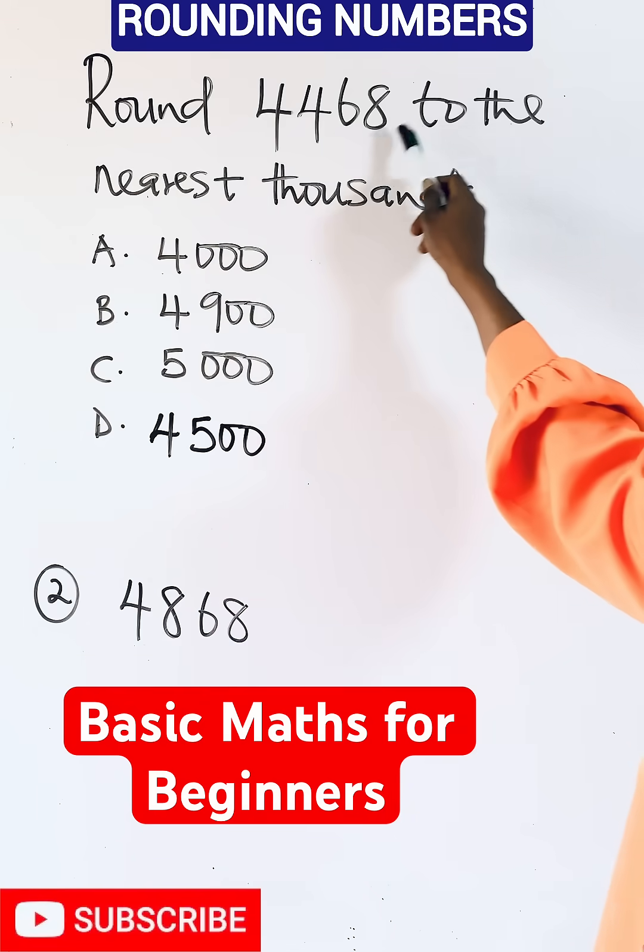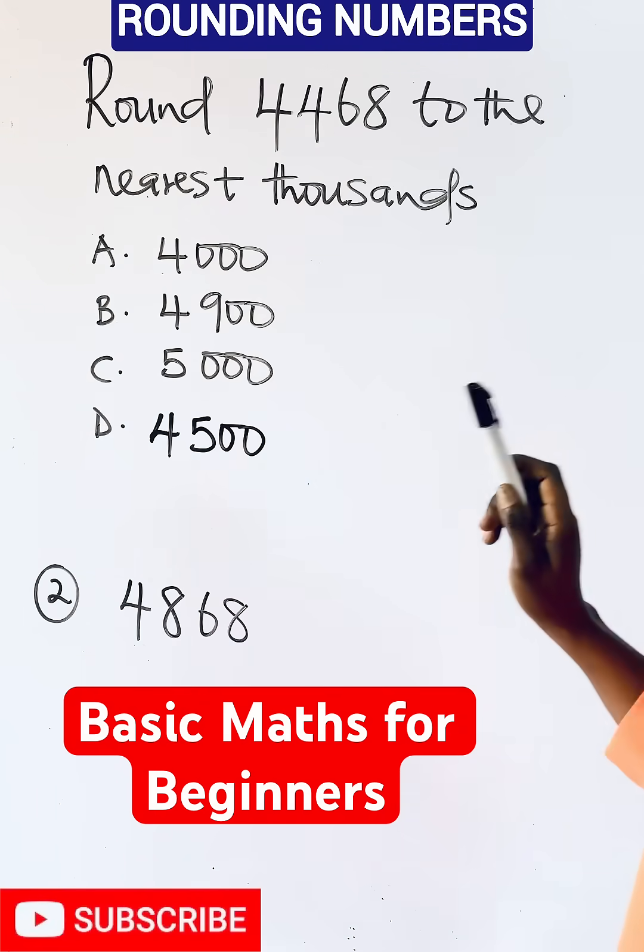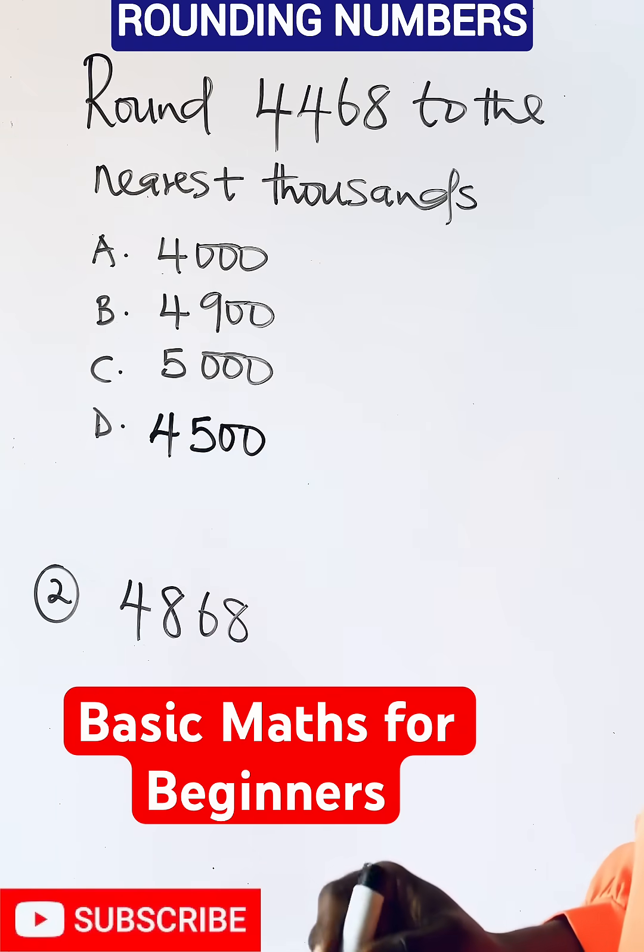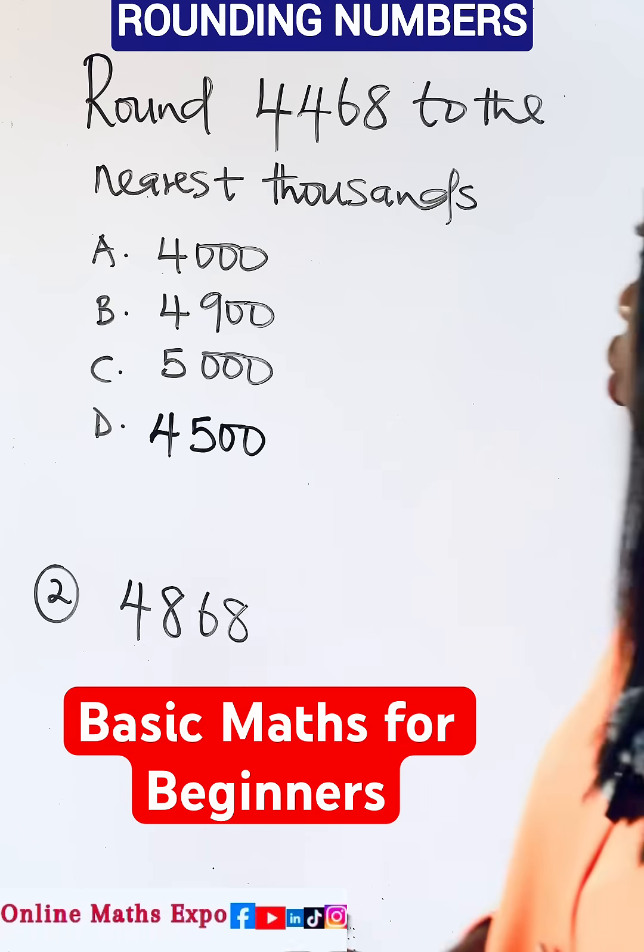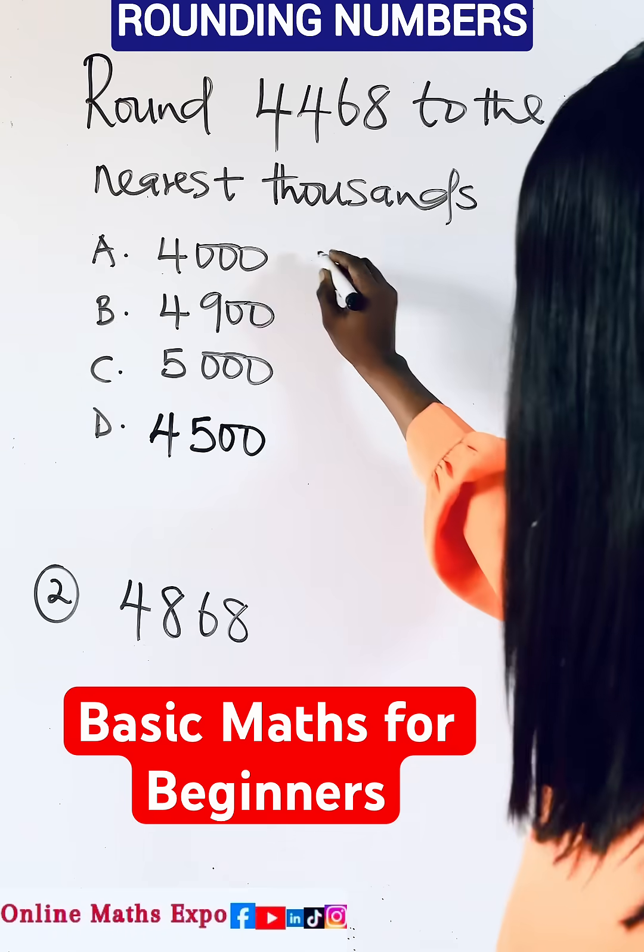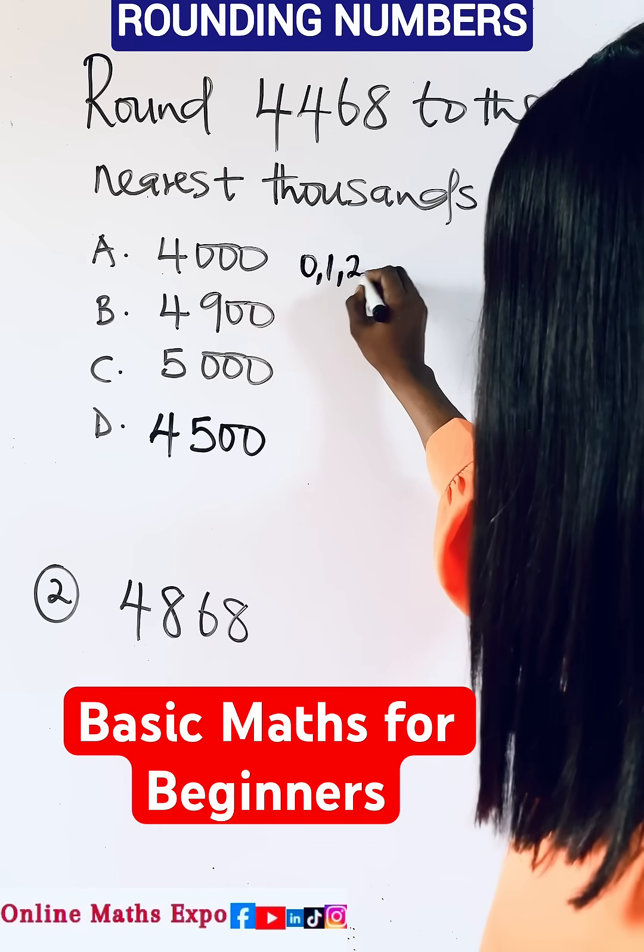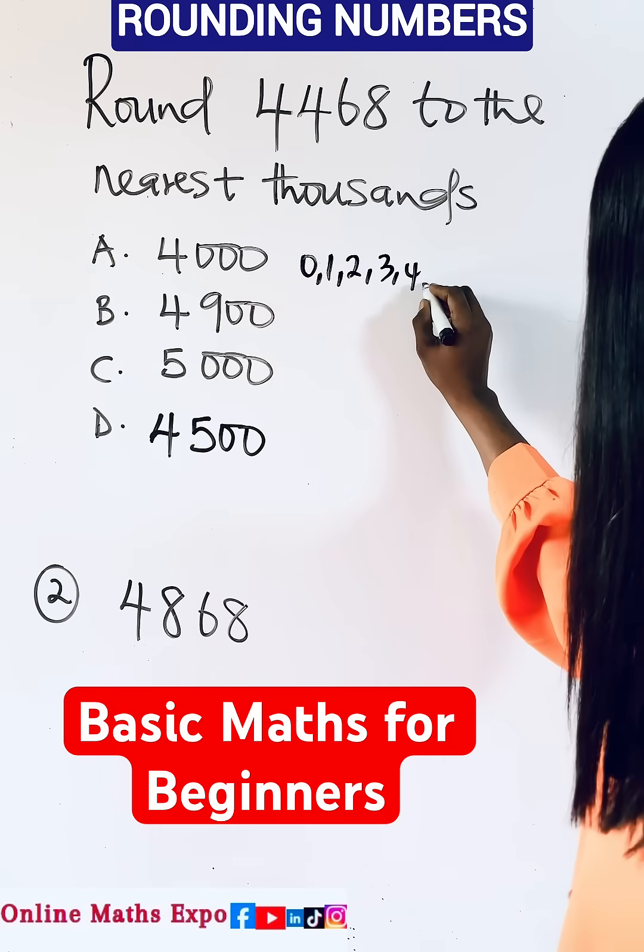You are asked to round this number to the nearest thousands. Which of the options is correct? Now what do you do? Just remember the rules for rounding. When you have 0, 1, 2, 3, and 4, you round it down as zero.